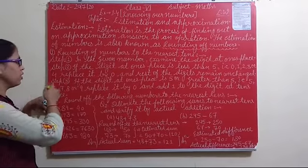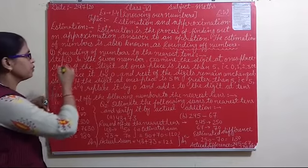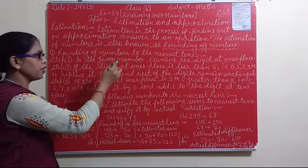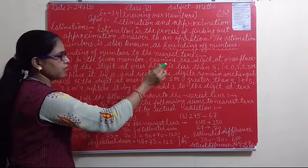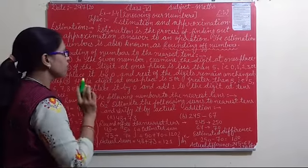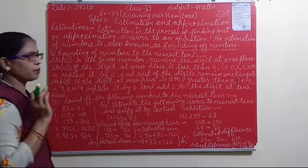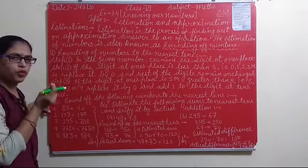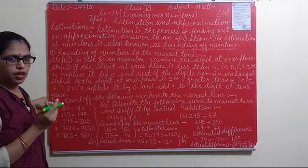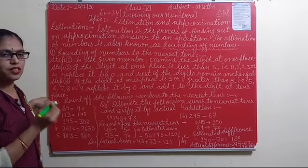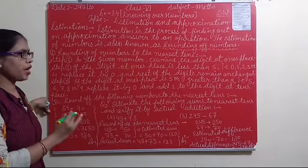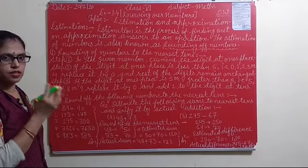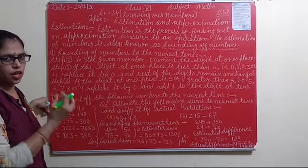Step one: In the given number, examine the digit at the one's place. First, check what the one's digit of the given number is.